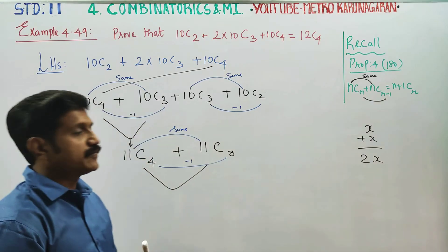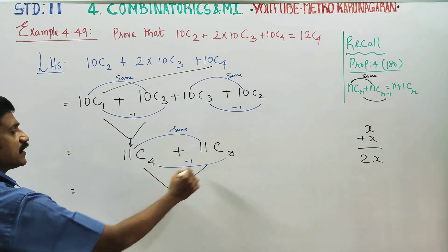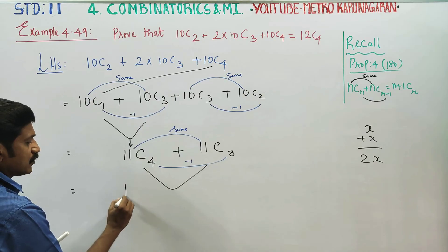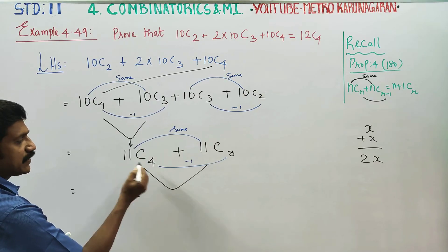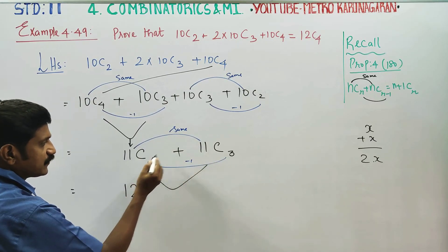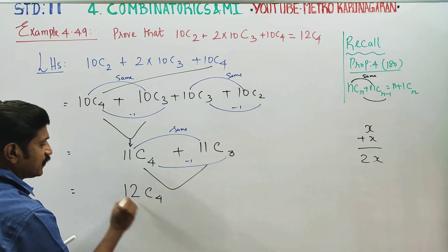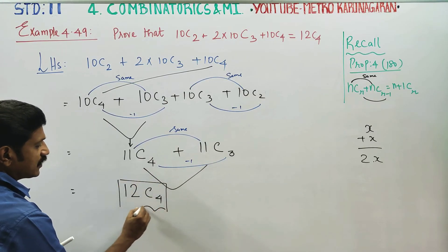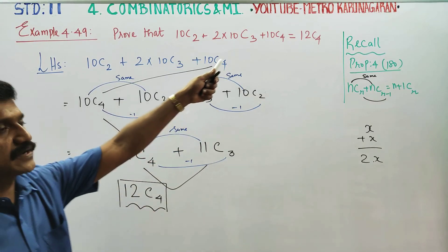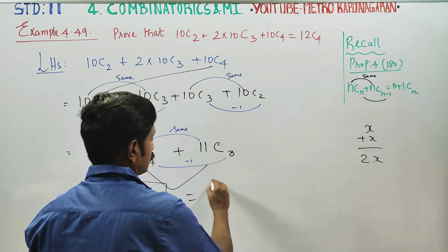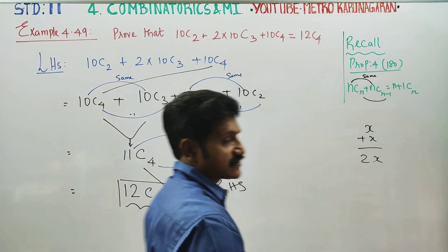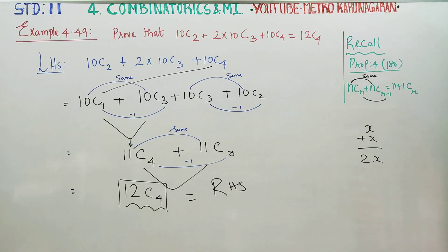Again, I am going to use property number 4. The answer will be 12C4, which is equal to your RHS. Hence the result. Thank you.